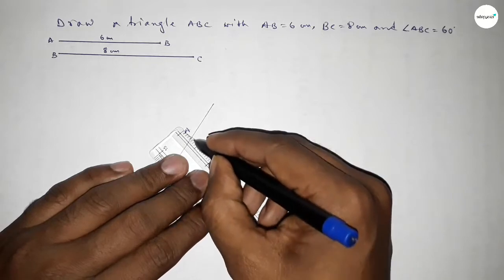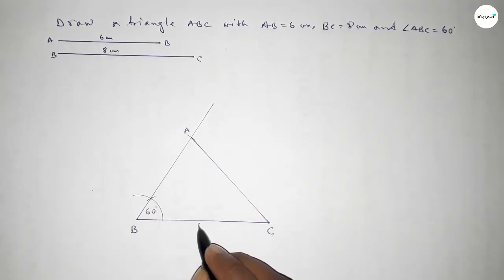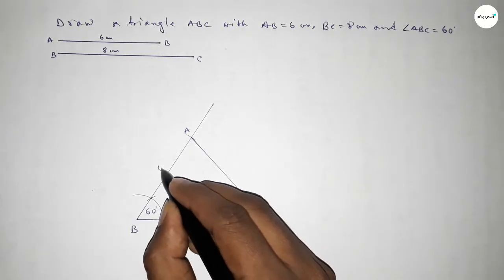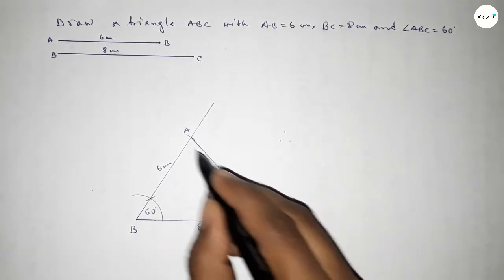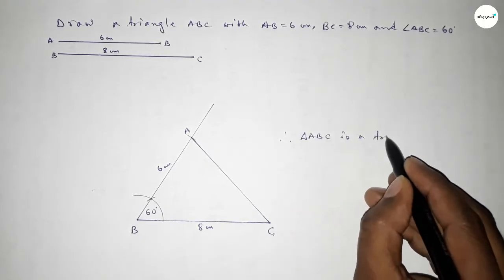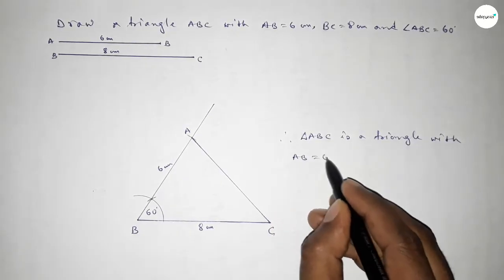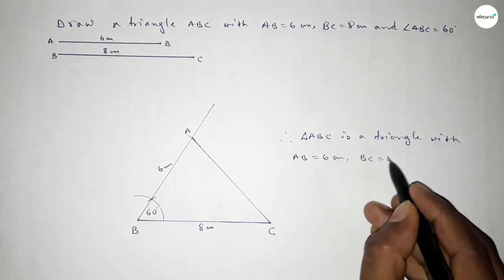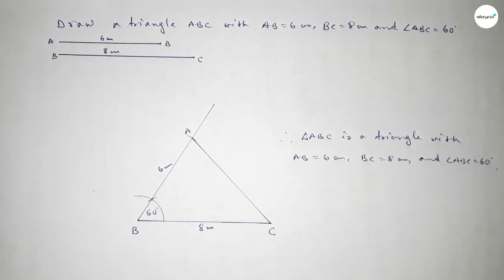Now we have to join A and C, so we got triangle ABC with BC equal to 8 centimeter and AB equal to 6 centimeter and angle ABC equal to 60 degree. That's all — thanks for watching. If this video is helpful, please share it.